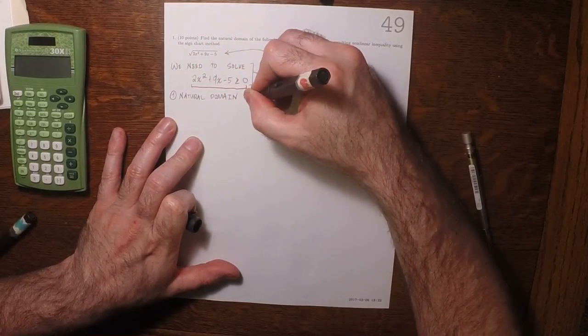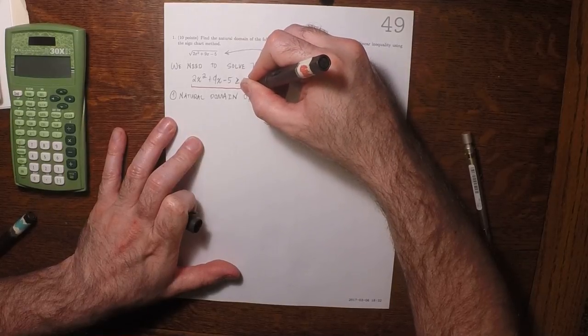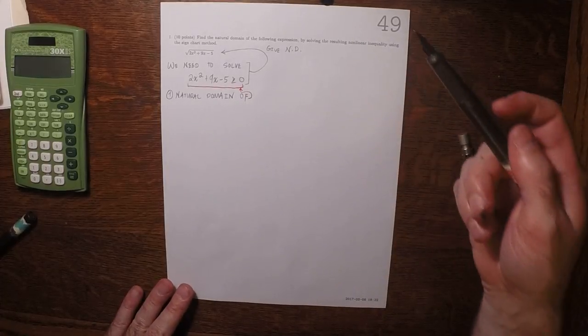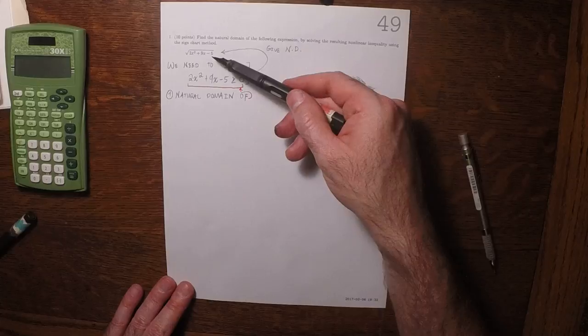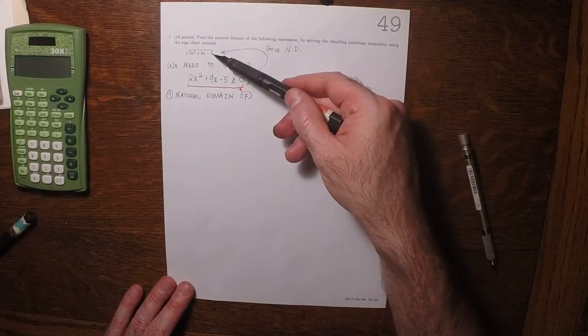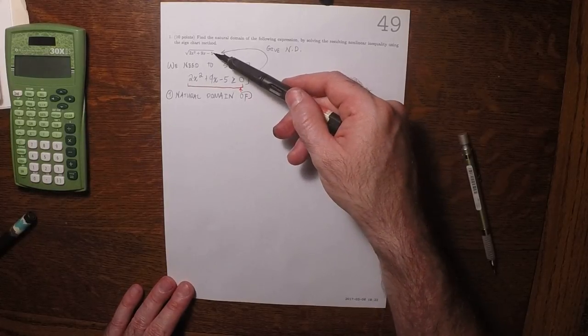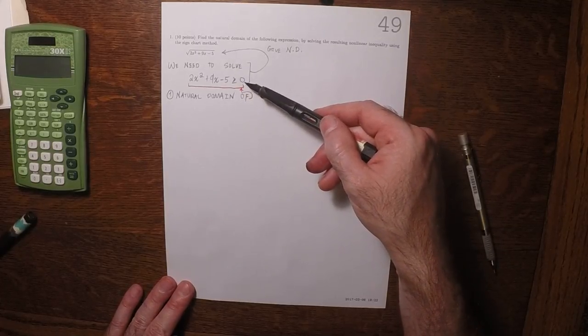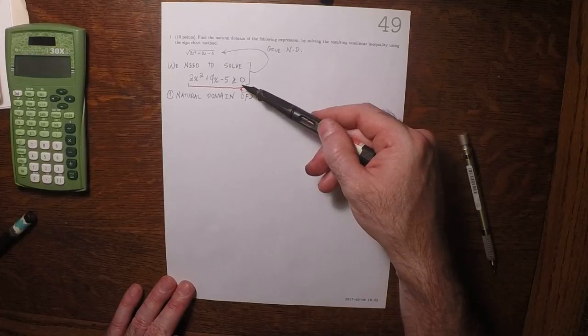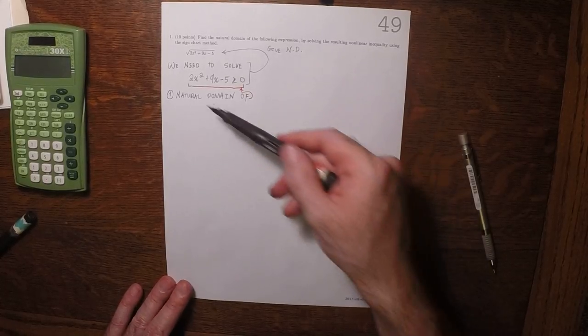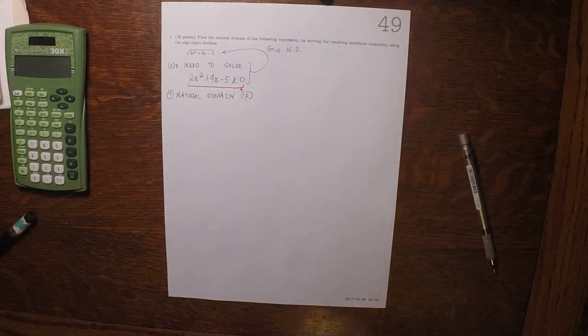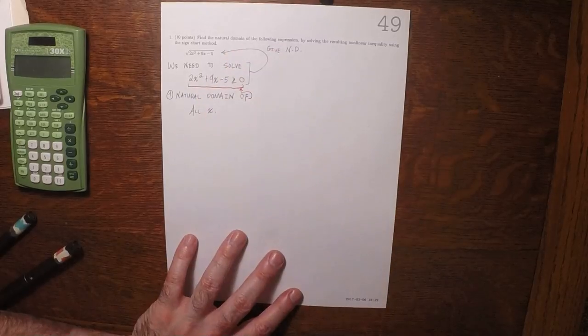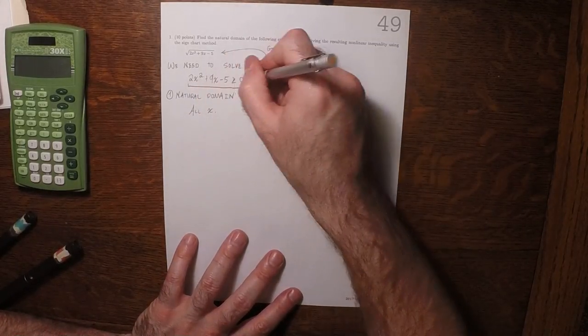Let's say this carefully. The instruction is to find the natural domain of that expression. The answer to that is finding the solution to this inequality. But then we want the natural domain of this inequality, and that inequality's natural domain is all x. So there's no breaks in this thing's natural domain.